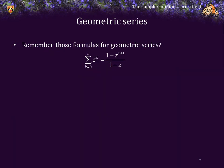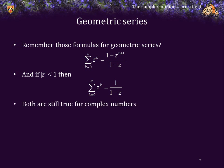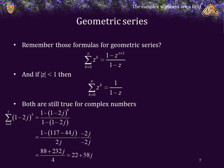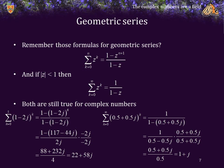Here's something cool. Remember those formulas we found for the geometric series? Here's a finite series, and then, if the absolute value of z was less than 1, we could also calculate the infinite series. When we proved these and found these formulas, we did not use any properties of the reals that do not also exist for the complex numbers. So both of these formulas are true for complex numbers as well. For example, if I sum from k equals 0 to 5 the powers of 1 minus 2j, this formula gives me the value 22 plus 58j. If I consider the infinite series of summing successive powers of 0.5 plus 0.5j, we get a formula that equals 1 plus j.